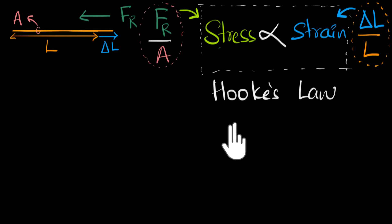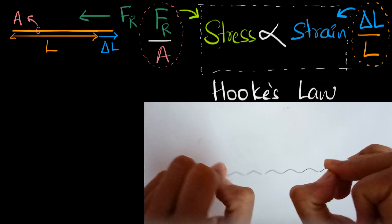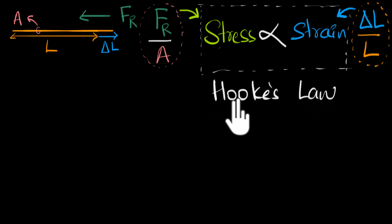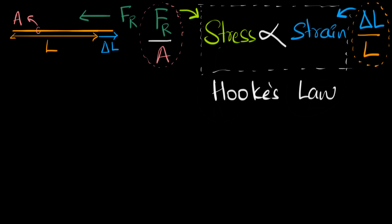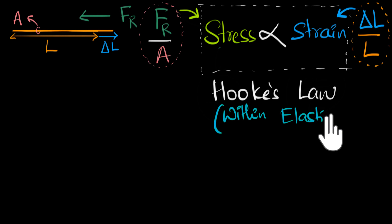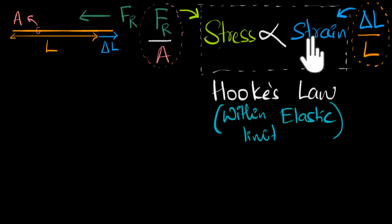But this law has a limitation. If you take a spring and stretch it too much, it will not come back to its original shape — it will have permanent deformation. So Hooke's law is only valid as long as you don't strain it too much. We say this only works within the elastic limits. Every material will have its own elastic limit, but there will be some limit, and as long as you're within that, this proportionality holds.